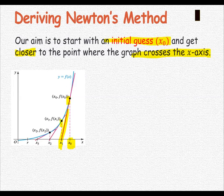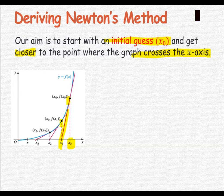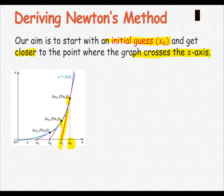Next, use the ordered pair (x₁, f(x₁)) and the slope at point x₁ to form the tangent line. The next tangent line has an x-intercept at x₂.